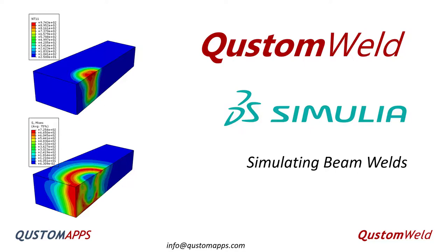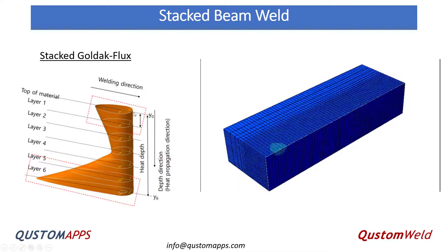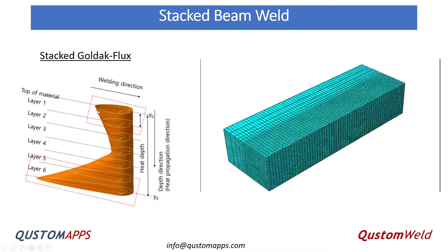We're going to talk today about a stacked beam weld. These are two different types of beam welds or laser welds that were just put into Custom Weld for the 2022 version. What the stacked weld looks like — here we have six different layers with this Goldac double ellipsoid shape. We call it a stacked Goldac, but it's not exactly like Goldac because Goldac has an elliptical shape in the Y direction, whereas the stacked Goldac beam weld is a linear interpolation between one double ellipsoid cross section to the other.